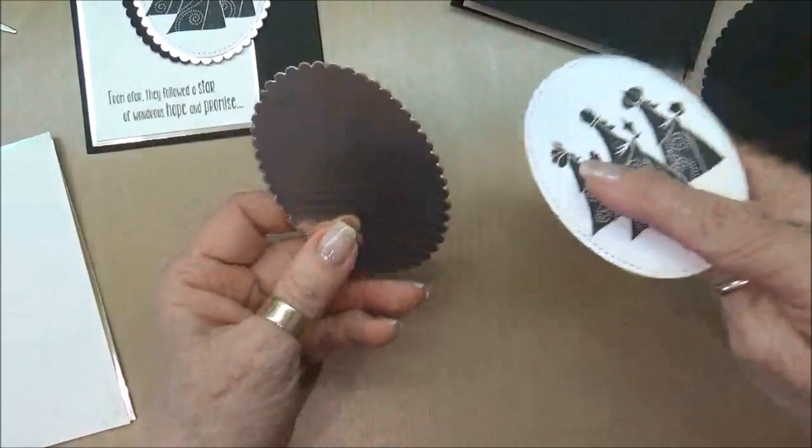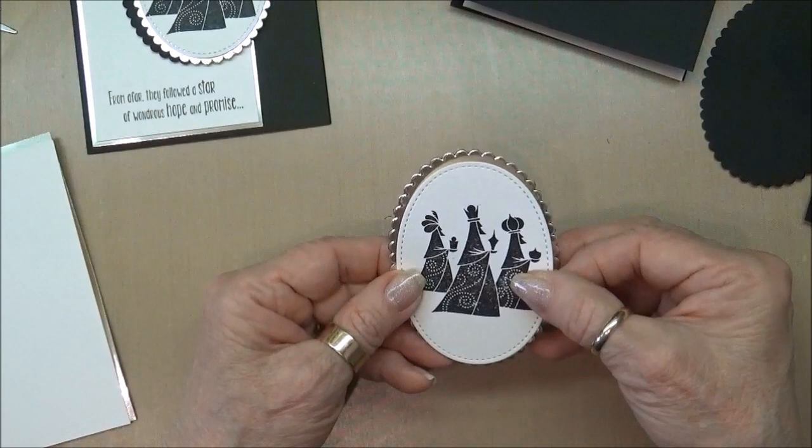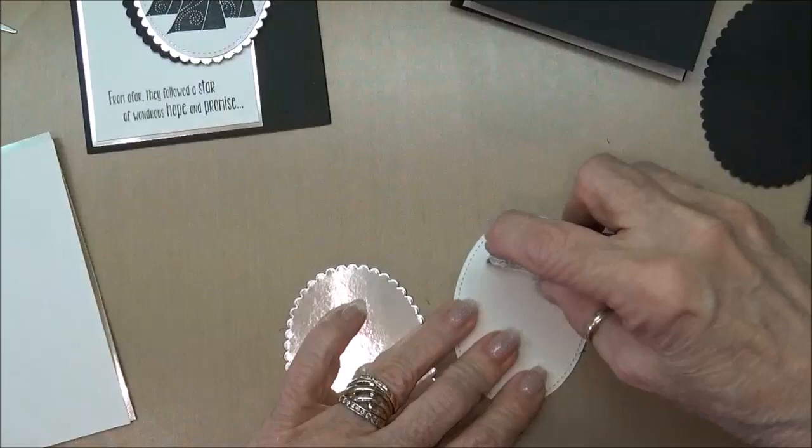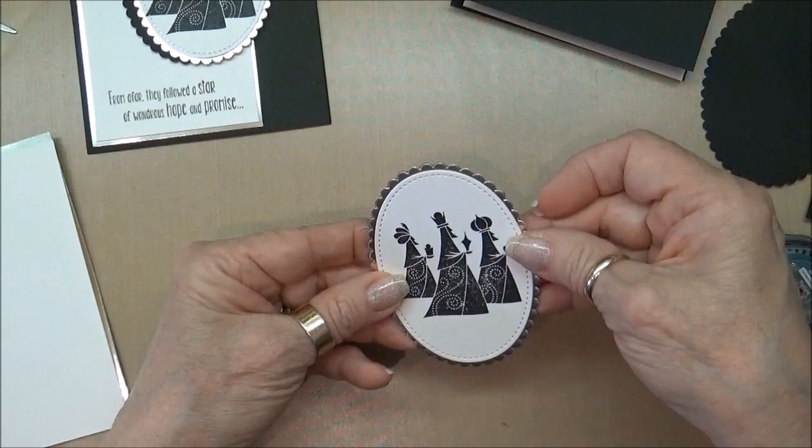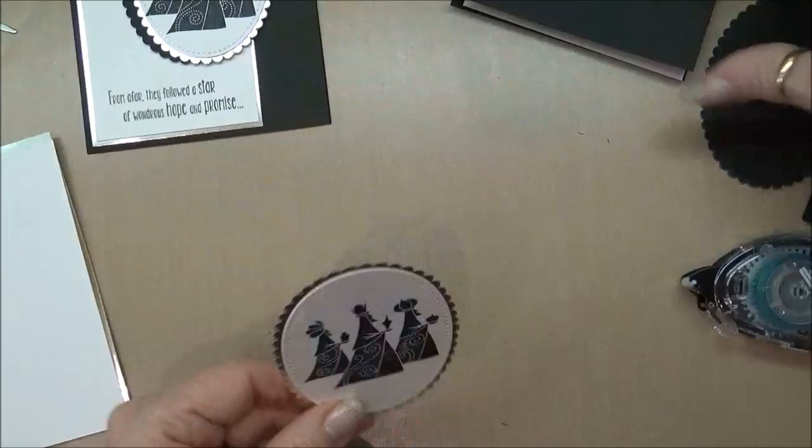So then we have the black and we have our champagne foil with our shimmery white cardstock so we can go ahead and mount these two together and I'm just going to use some snail and I'll go ahead and mount those just like that.